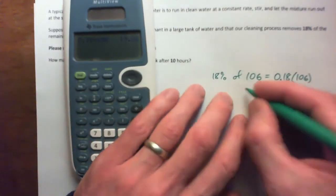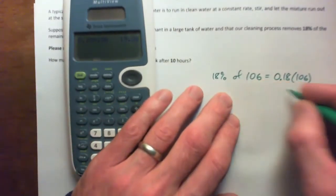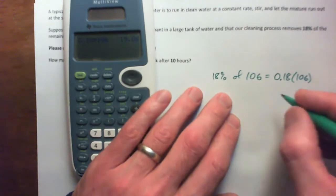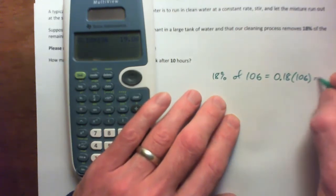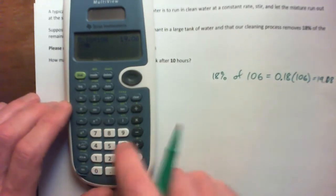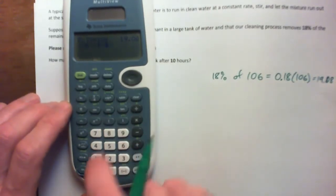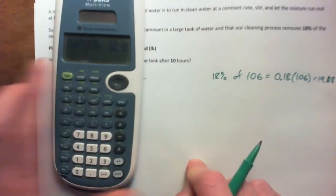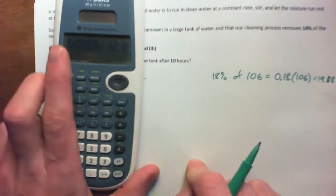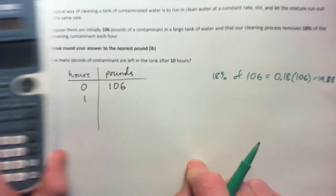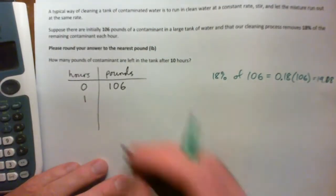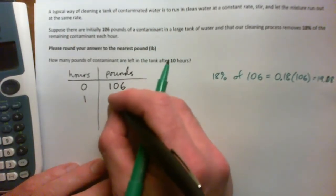And then we go 106 minus 19.08, and we get 86.92. So after one hour we'll have 86.92 pounds remaining.